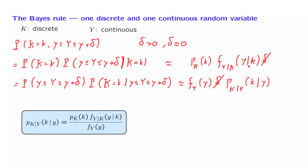This version gives us the conditional probability of a random variable K given that a certain continuous random variable Y has taken on a specific value. It is useful if we have a continuous noisy observation Y, on the basis of which we are trying to make inferences about the discrete random variable K. To apply the Bayes rule, we need to know the unconditional distribution of K, and we also need a model of the noisy observation — the distribution of Y for each possible value of K.